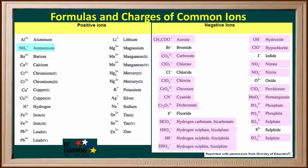The polyatomic ions that we'll be using in this course are shaded on this table. If we are given a formula with more than two elements in it, we look on this table for any polyatomic ions that are in the formula.